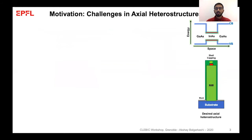Here I show a typical axial heterostructure that we are interested in, where the quantum dot is placed on the axis of a nanowire and then capped with a higher bandgap gallium arsenide shell. On the top, we see a band alignment of the material system of interest to us, which is an indium arsenide quantum dot embedded in high bandgap gallium arsenide barriers.